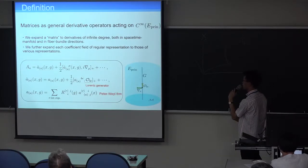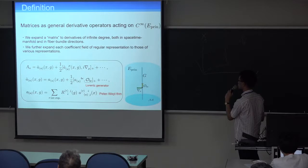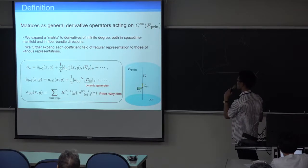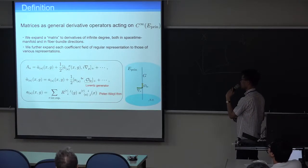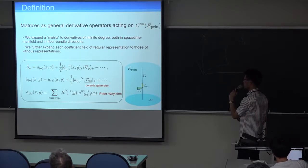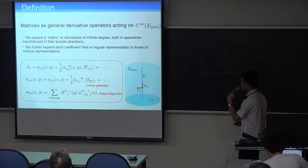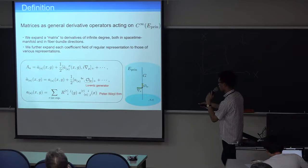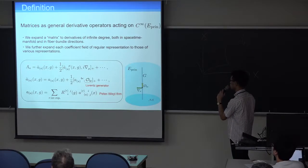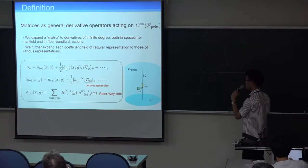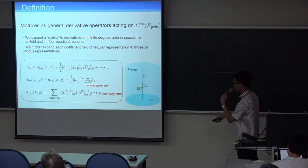And so, oh, sorry. So this, the rest operator is a scalar operator acting on the smooth function of principal bundles. Therefore, we expand a matrix to derivative of infinity to degree on this functional space. And here's the derivative in the space-time direction and fiber direction. The derivative in fiber direction is equivalent to the Lorentz generator. So this is the expression of expansion.